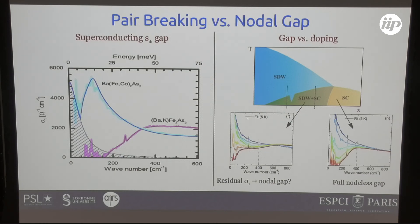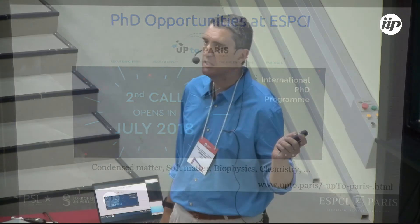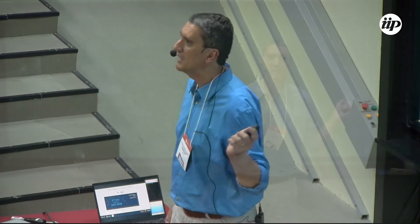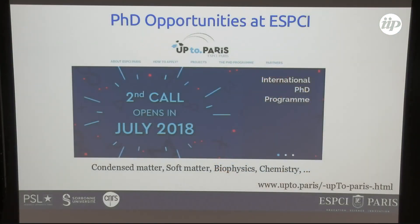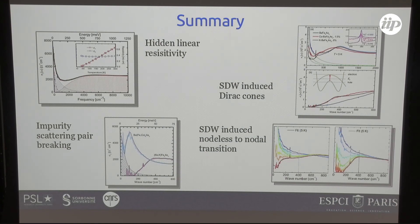In conclusion, I've tried to show four features of the physics in the nicktides: first, that multiband conductivity changes how you interpret the data; second, that there is potentially interesting Dirac physics, though still incipient; and third, that very interesting effects appear in the superconducting gap, whether from in-plane versus out-of-plane doping or from entering the magnetic phase. There are also PhD positions available at ESPCI — see the website or talk to me. Thank you very much.